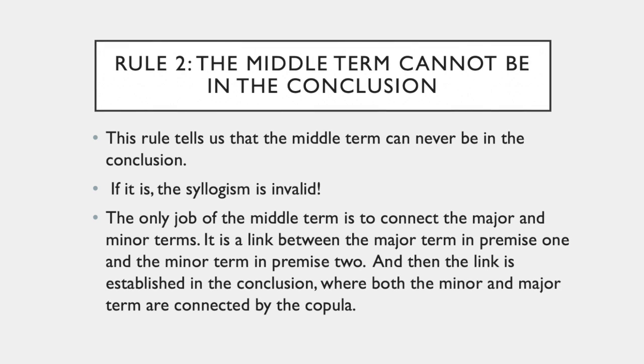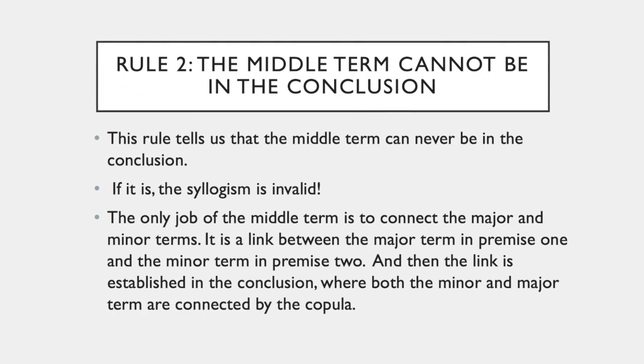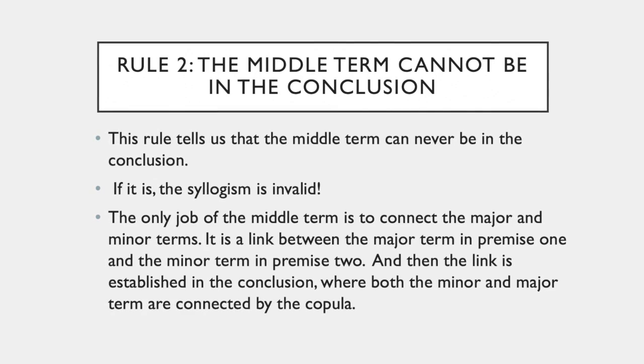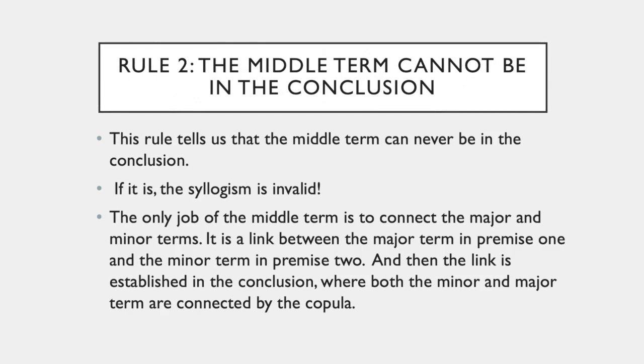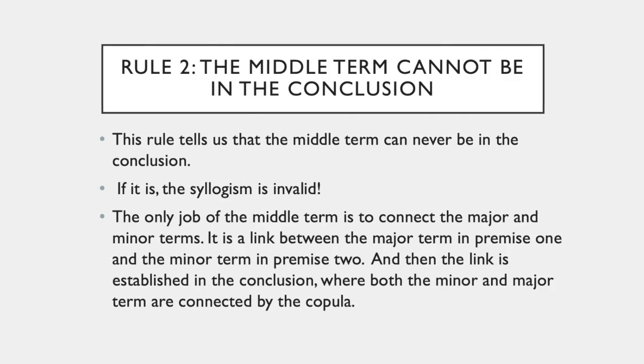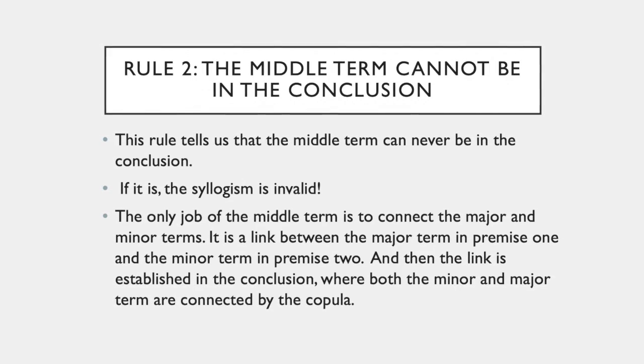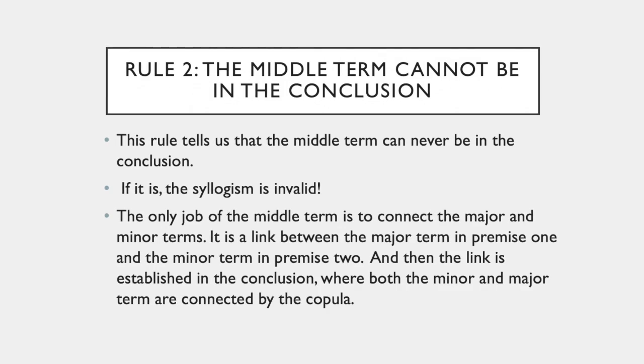So we've looked at this first rule of validity, and here's the second rule of validity. The middle term cannot be in the conclusion. So if you look at a syllogism and the middle term is in the conclusion, you know immediately that the syllogism is invalid.